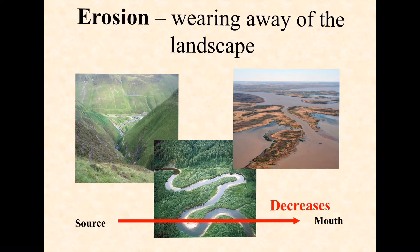Now let's consider erosion — the wearing away of the landscape. In the upper course you've got steep valley sides caused by vertical downwards erosion. In the middle course you have more lateral and vertical erosion, causing meanders and oxbow lakes. But in the lower course you get very little erosion because there is more deposition — more dropping off of sediment — creating estuaries and deltas. Therefore, in relation to the Bradshaw model, erosion decreases as you move from source to mouth.